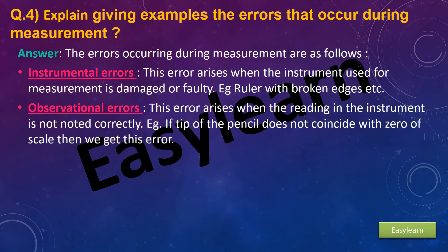Second, observational errors. This error arises when the reading in the instrument is not noted correctly. Example: if the tip of the pencil does not coincide with the zero of the scale, then we get this error.